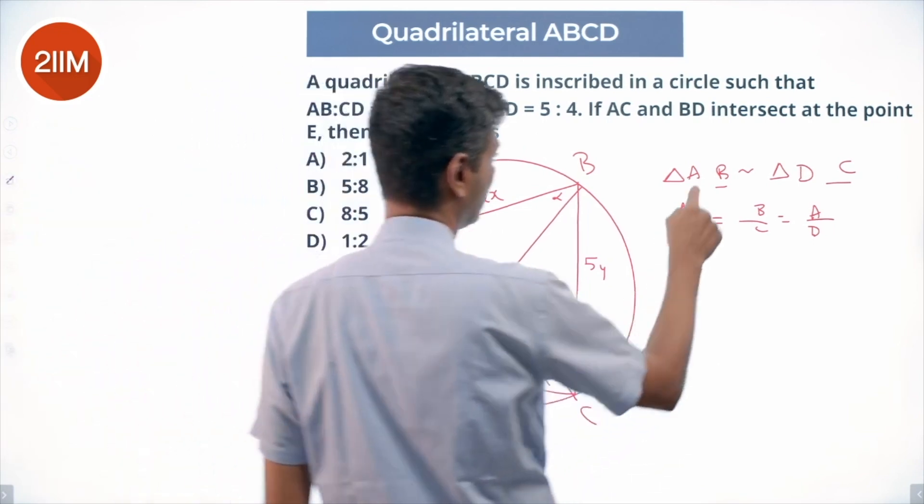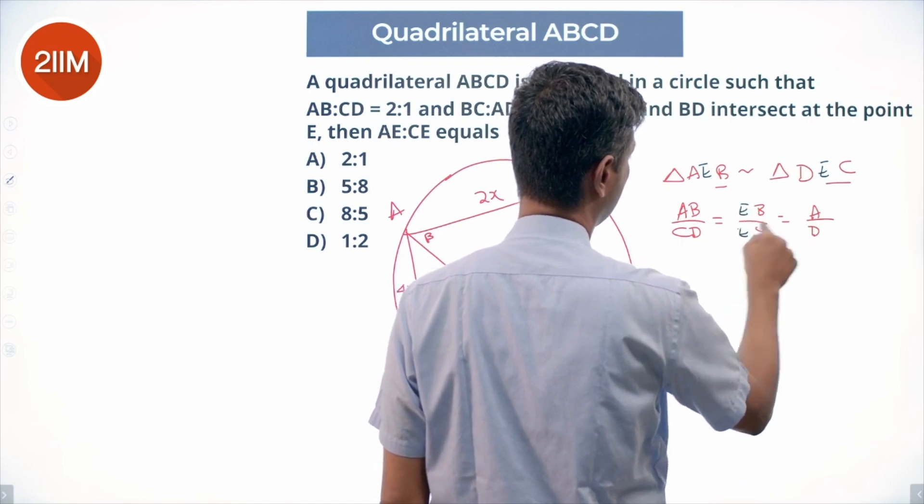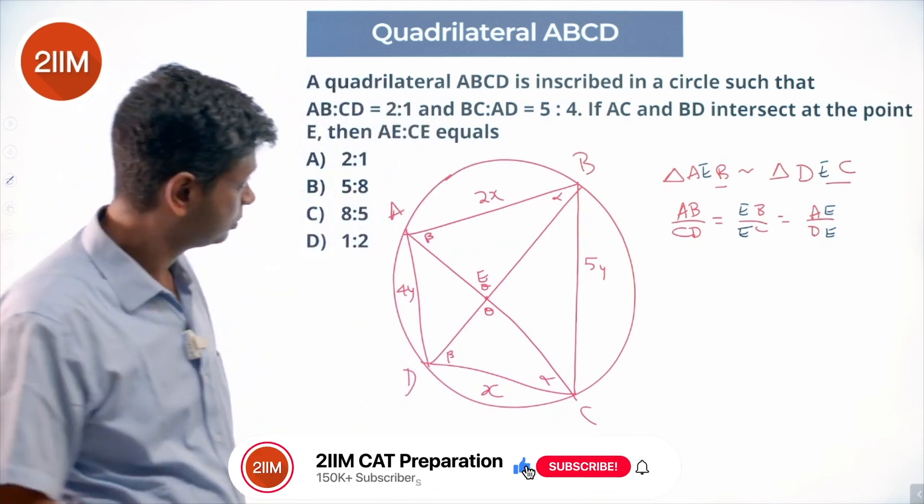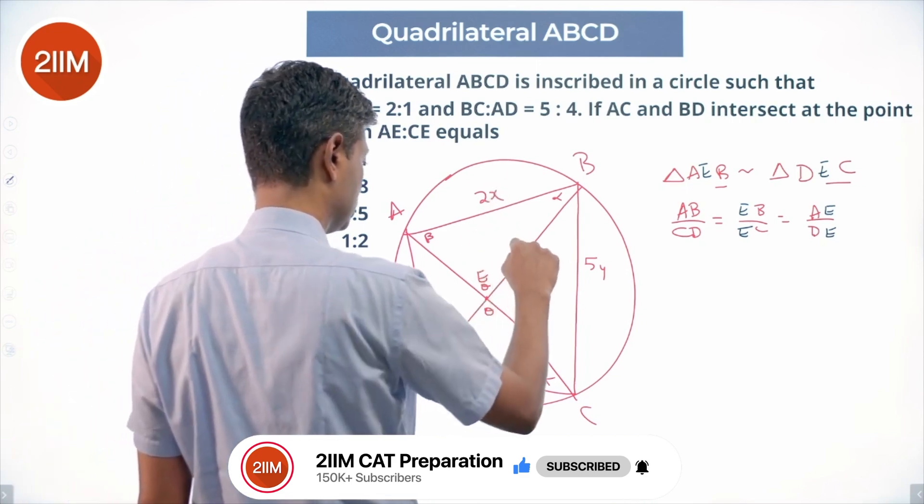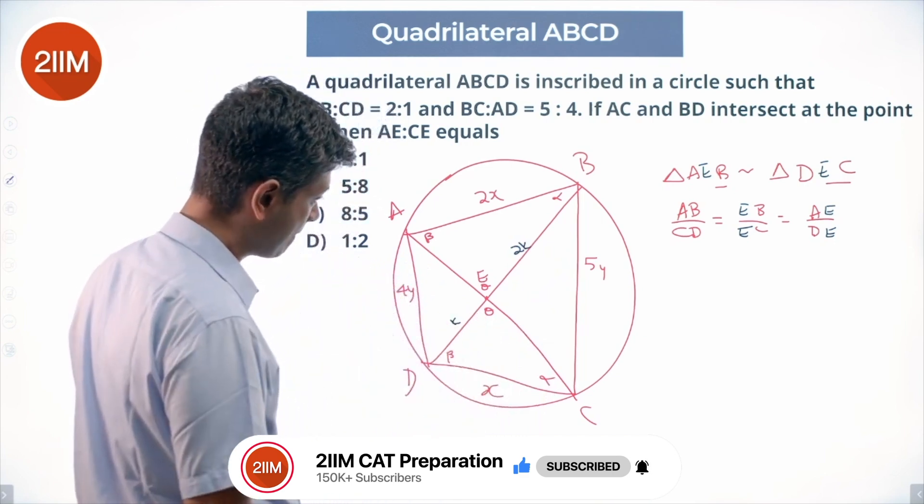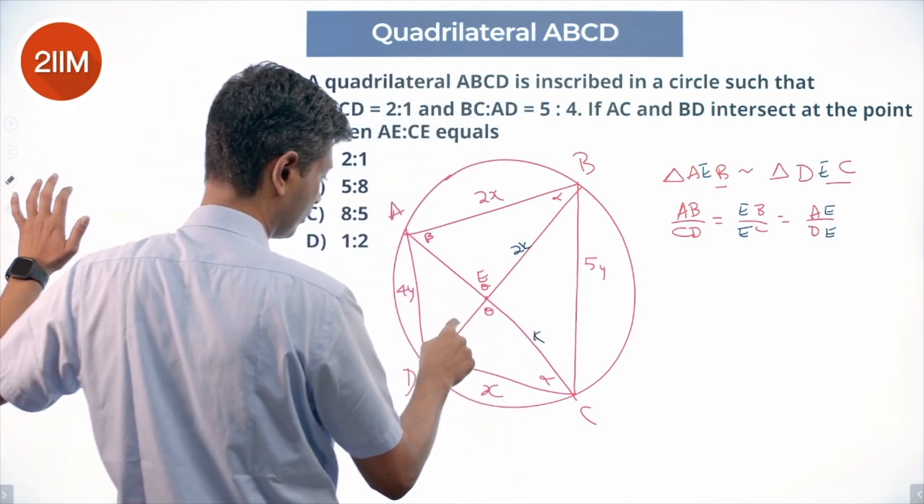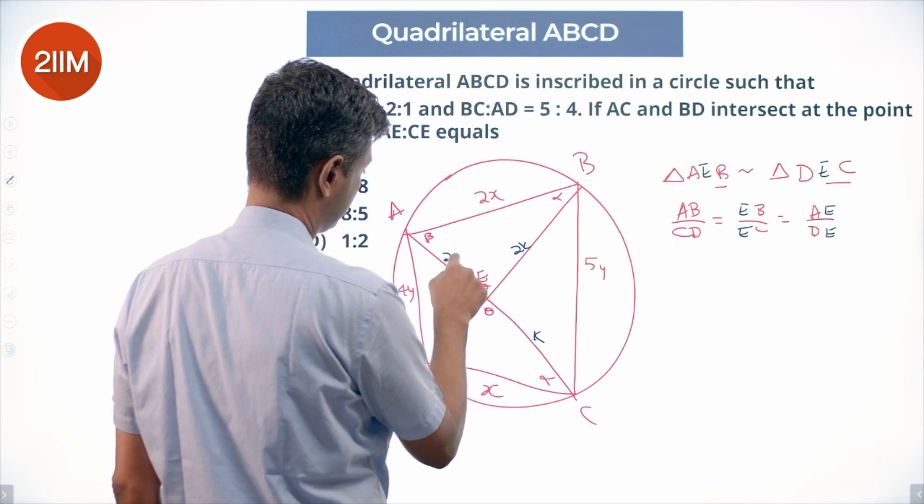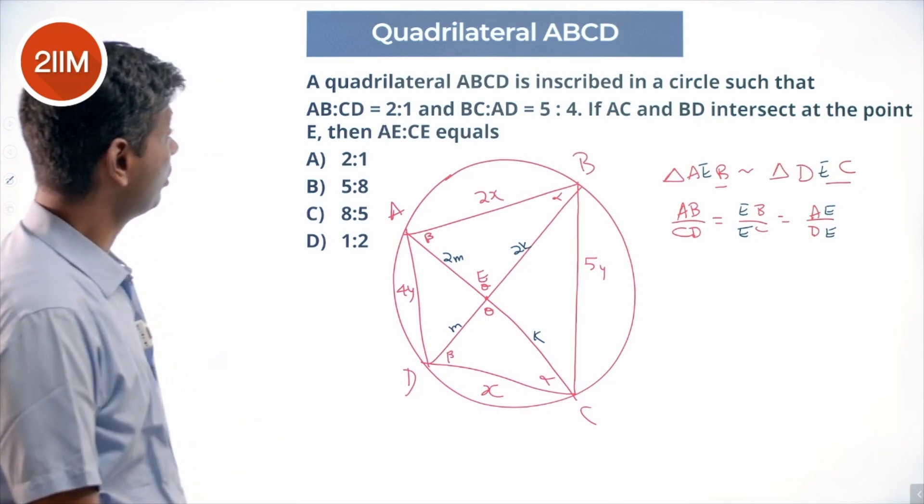Triangle AEB is similar to DEC, so AB/CD = EB/EC = AE/DE. Since AB/CD = 2:1, we have EB/EC = 2K/K. Also, AE/DE = 2M/M, which is all nice and brilliant.